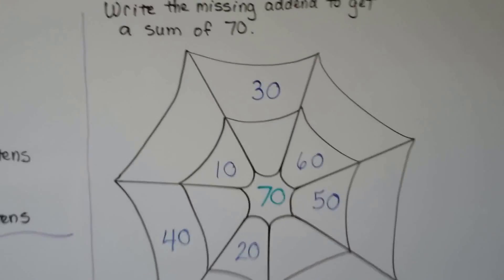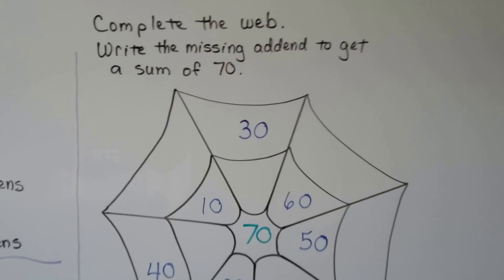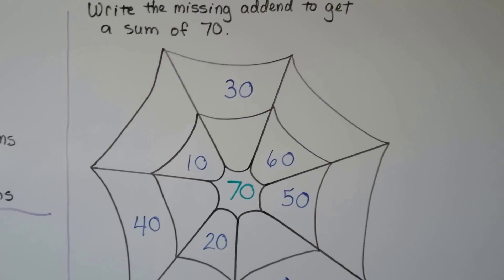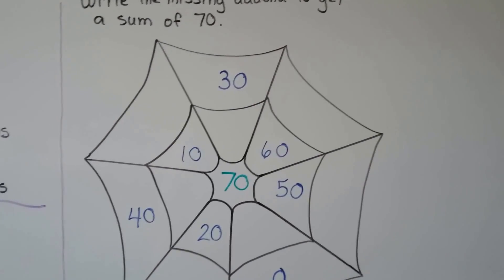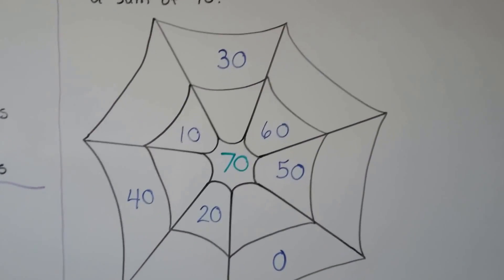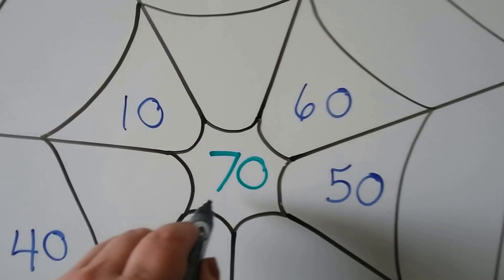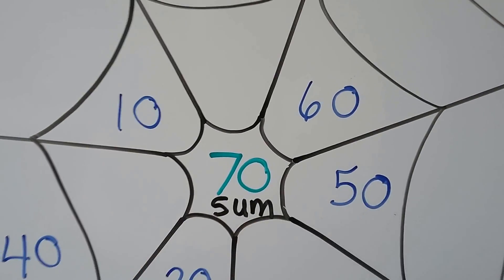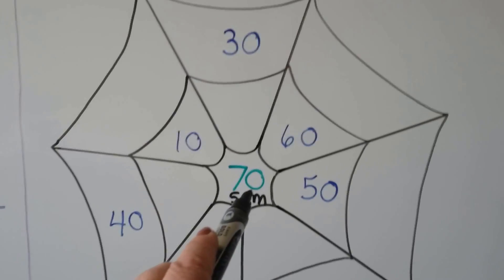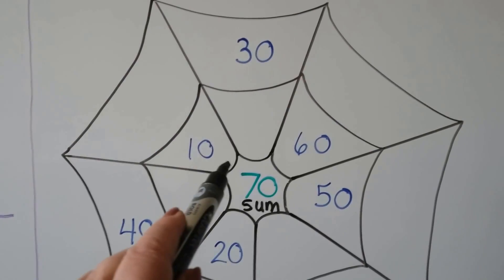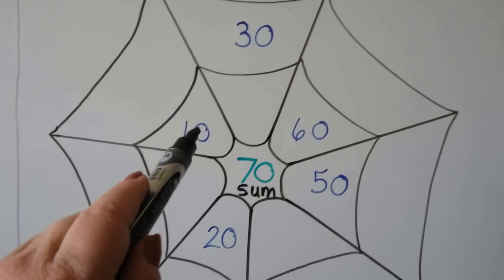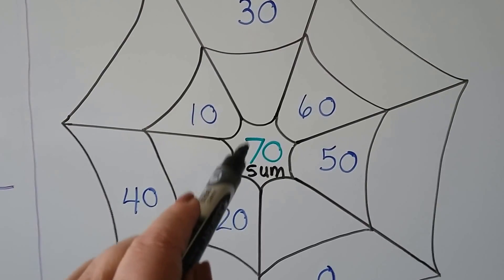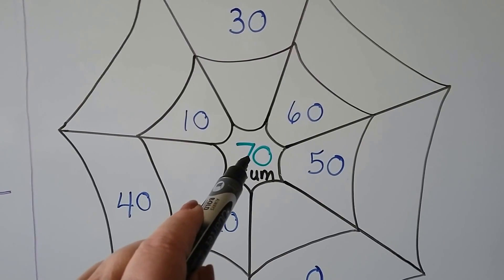Now here we have a puzzle. It says complete the web. Write the missing addend to get a sum of seventy. So here's our sum right here — seventy. We need to go outward and think of a number that when added together is going to give us a sum of seventy.